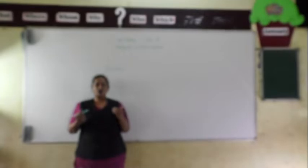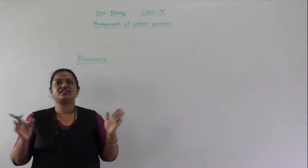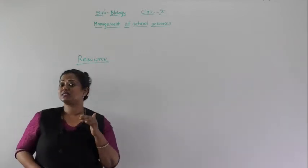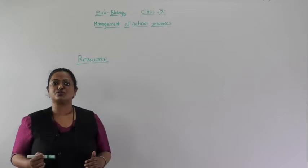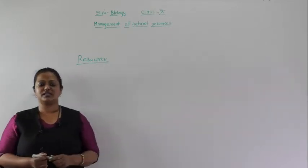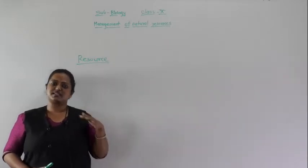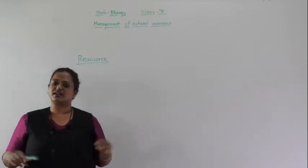First of all, I would like to clear the concept of a resource. What is meant by resource? The things which are useful for us are called resources — the things which support our life. For example, this board is a resource, this marker is a resource, the camera I am recording on is a resource. For you, your camera, laptop, or TV screen can be a resource. The things useful in our daily life are resources, and the things which are no longer of use are called waste.